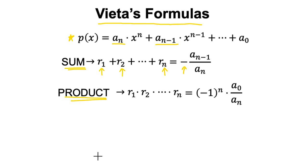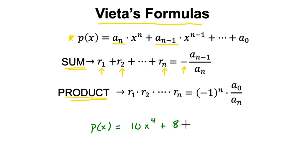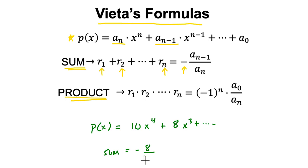So if you have some polynomial — we don't even need to finish it completely — say p(x) equals 10x to the fourth plus 8x to the third, and then some other stuff. It's saying that the sum of the roots is based on what you see right here. It is the opposite of this ratio, 8 over 10. And that is the sum of the roots. In this case, it would be negative four-fifths. Pretty cool, right?